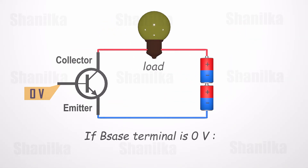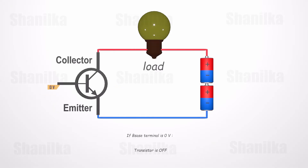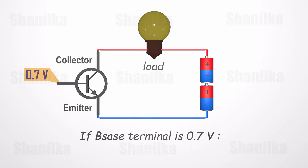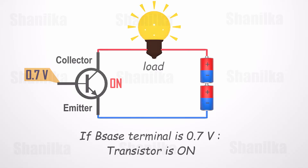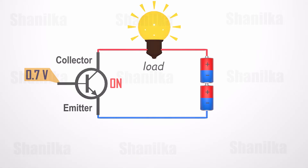Under normal conditions, there is a high resistance between the collector and emitter terminals, so the transistor acts as an off switch. But when we apply +0.7 volts to the base junction of an NPN transistor, the resistance between the emitter and collector terminal becomes zero, and it acts as an on switch. Likewise, we can control the switching action using the electric signal applied to the base terminal.